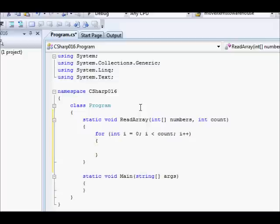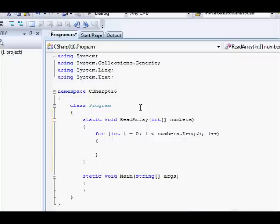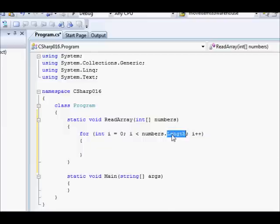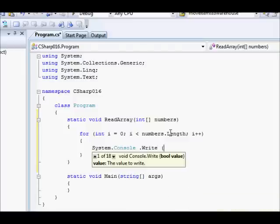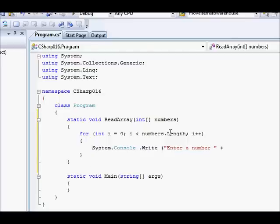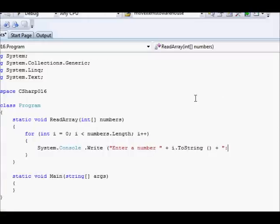So far so good. And now, well actually we could make this a little bit different. So here I am going to say numbers dot length. There we go. So we have numbers dot length. This is a property within the array and you could use that in order to know how many elements can an array store. So in this case we are going to display a message. So system dot console dot write enter a number. And here I am going to say plus i dot to string. Because we want to know which number we are entering or which cell we are accessing within that array.